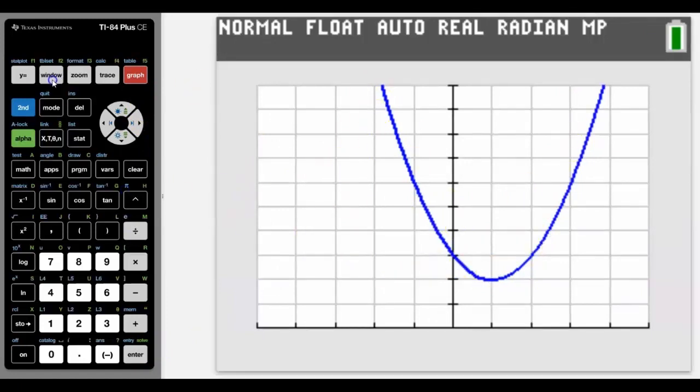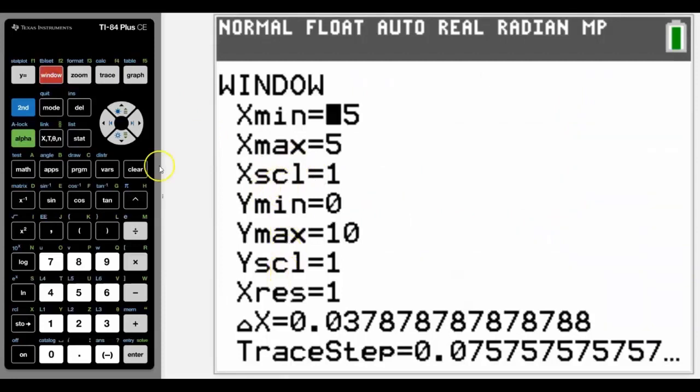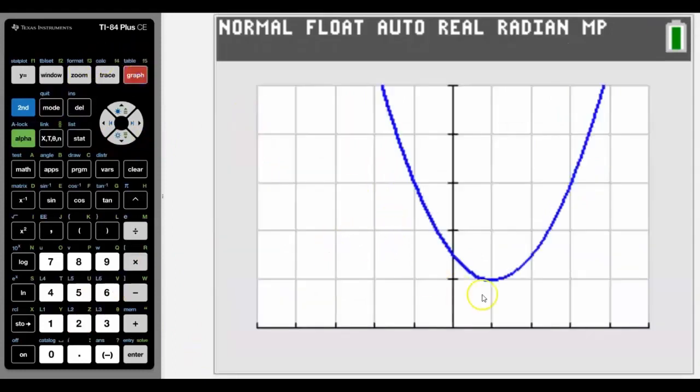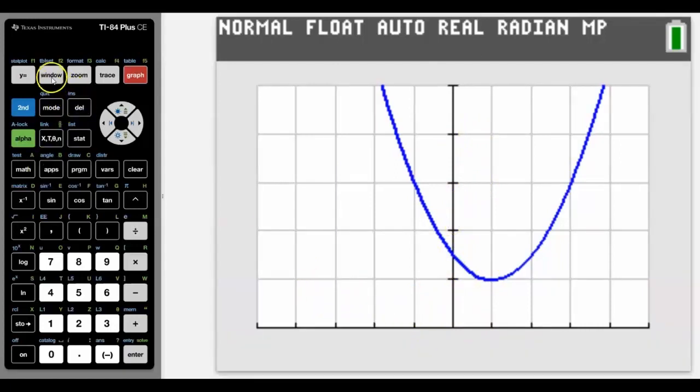These grid lines are controlled by the x and y scale. If I change that y scale to, say, two, then it will give me a bar every two rather than every one. So just bear in mind that the x scale and y scale control the grid lines.